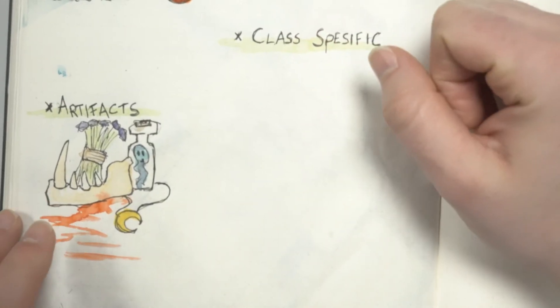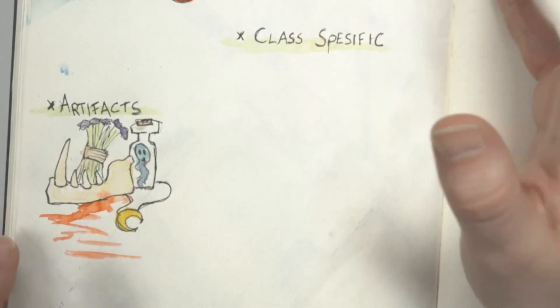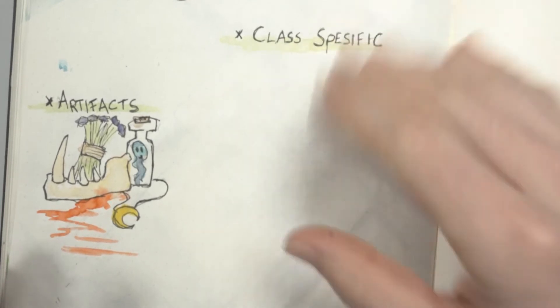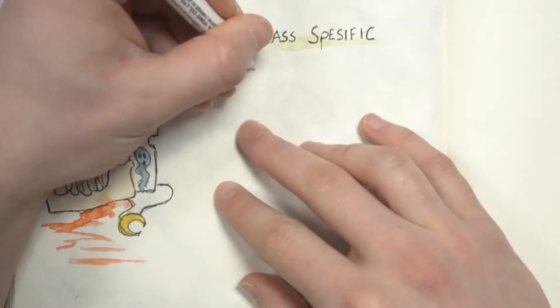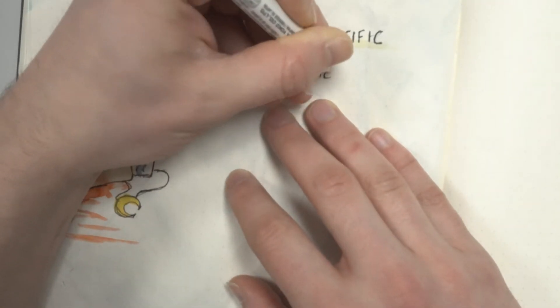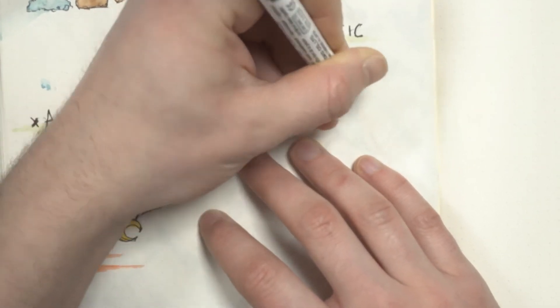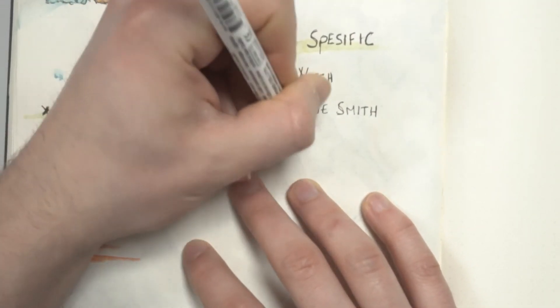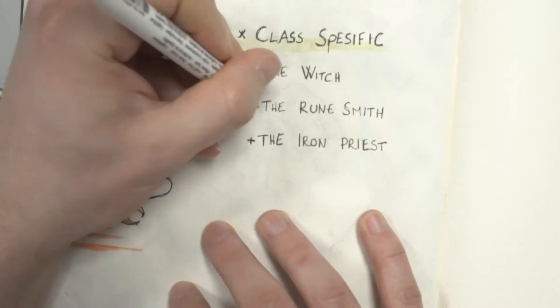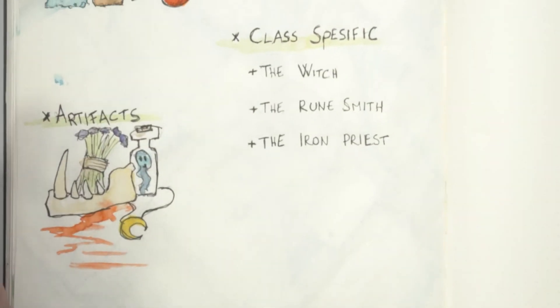But I know that I want some sort of direction for characters that make them mechanically different from each other. So far, I have the idea of three types of spellcasters. I'll go into these three types in the next episode, and they are the witch, the runesmith, and the iron priest.